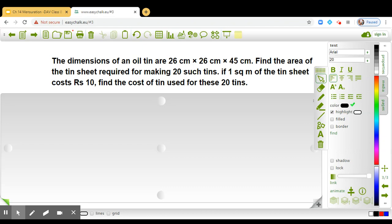Find the area of the tin sheet required for making 20 such tins. If 1 square meter of the tin sheet costs rupees 10, find the cost of tin used for these 20 tins.